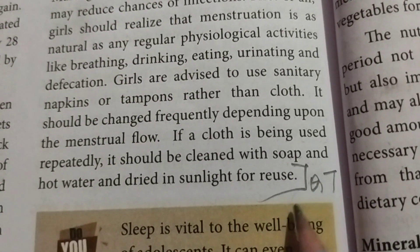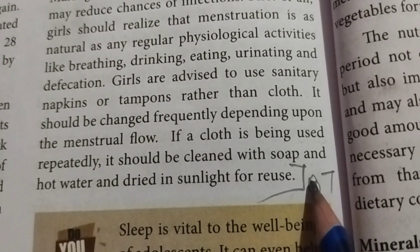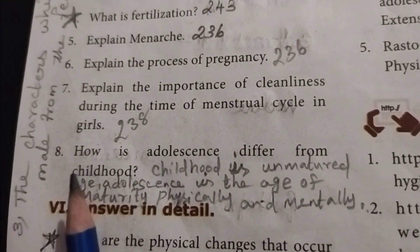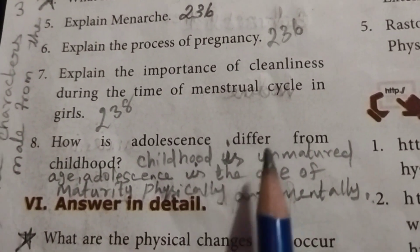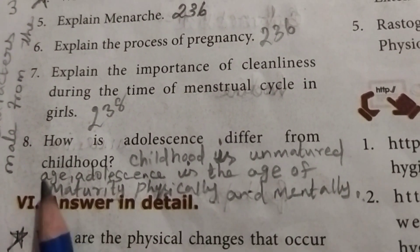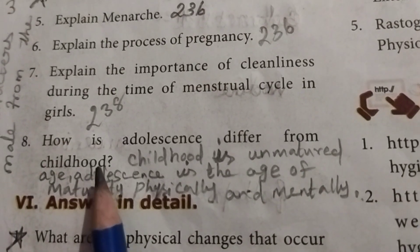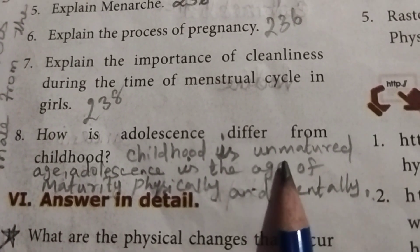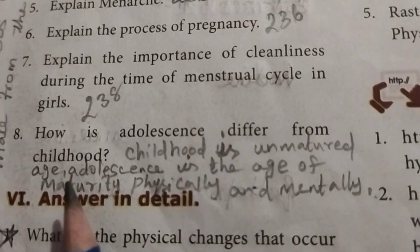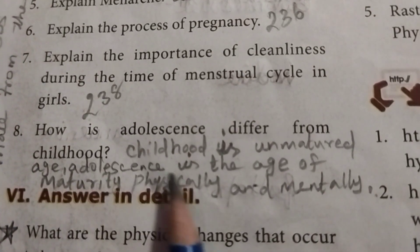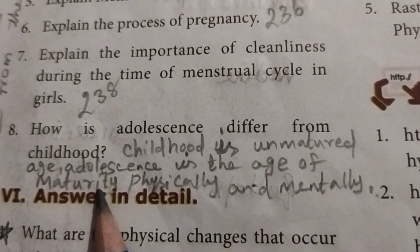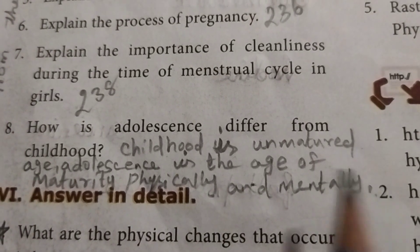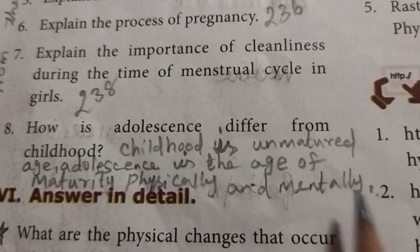Question 8: How does adolescence differ from childhood? Childhood is an unmatured age, whereas adolescence is the age of maturity, both physically and mentally. Up to this, eighth question answer.